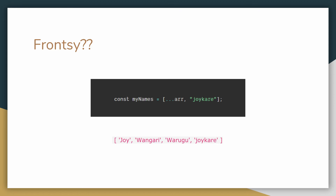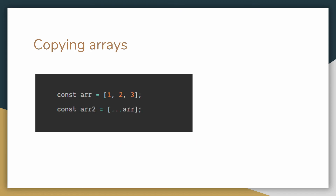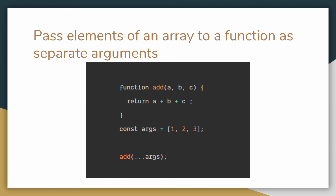The second use case is just copying an array. In the previous use case we were adding the content of an array inside another array in addition to its existing content. But here we are just copying one array to another using the spread operator with the previous array. A more clear use case is passing the contents of an array to a function as individual arguments. Before the existence of the spread operator, in order to do so we would have to loop through each value of an array, store those values, and then pass all those values to the function.